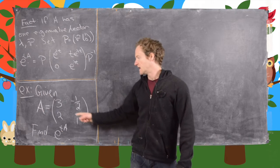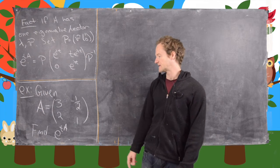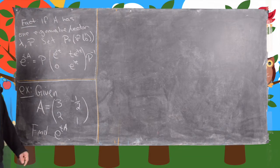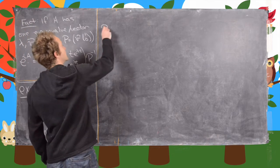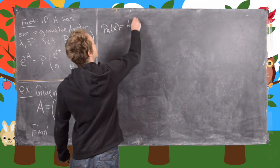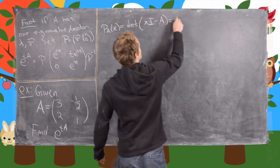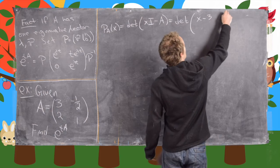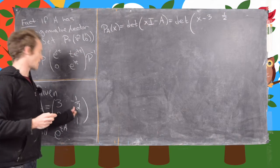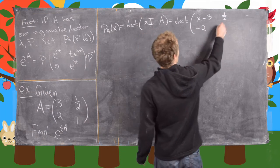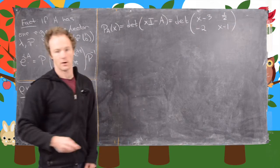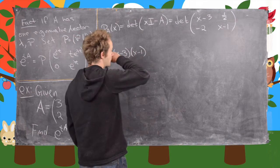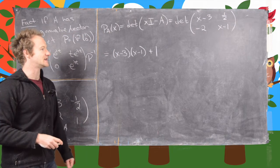Our example: given the matrix A equals (3, -1/2, 2, 1), find E to the AT. We need to find the eigenvalue and eigenvector, so we look at the characteristic polynomial. P_A of X equals the determinant of XI minus A, which is the determinant of (X minus 3, 1/2, negative 2, X minus 1). That equals (X minus 3)(X minus 1) plus 1, using the AD minus BC formula for the determinant.